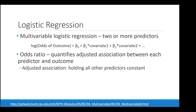In multivariable logistic regression, we take this one step further with more than one predictor. The log odds of outcome is modeled as a function of our covariates, and the odds ratio quantifies the adjusted association between each predictor and outcome — meaning holding all other predictors constant.